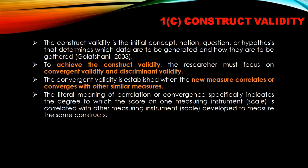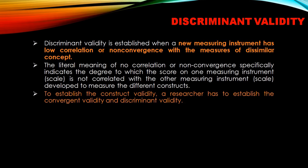Convergent validity is established when the new measure correlates or converges with other similar measures — it's more of a drawing of consensus, a meeting of minds. When two or more measures talk about similar constructs and they converge, that is convergent validity. Specifically, it indicates the degree to which the score on one measuring instrument is correlated with a scale developed to measure the same constructs.